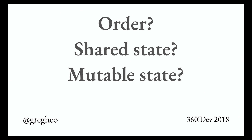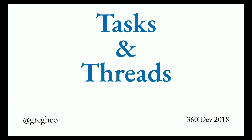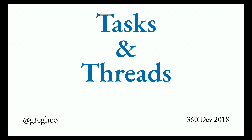If order doesn't matter, then we can say two things are independent. If shared state is in play, that might hint that something has to happen before something else. If mutable data is in play, there's a strong sense that order does matter and you have to think about it. And then if order matters, things get more difficult — we have to do callbacks, notifications, or some other mechanism to ensure correct order. And then we start questioning our choice of careers working in iOS.